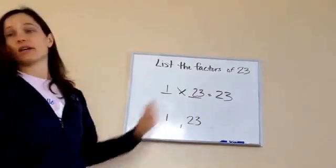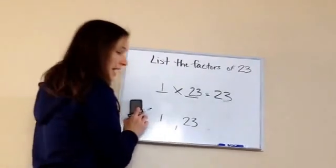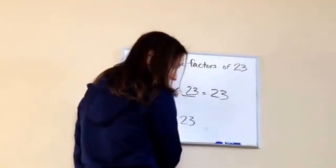You'll learn about prime numbers later, but this is an example of a prime number because there's not any more factors other than one and itself. You understand? Yep. Okay, that is lesson twenty-five.